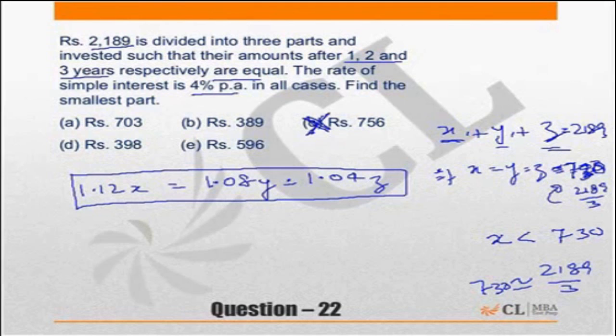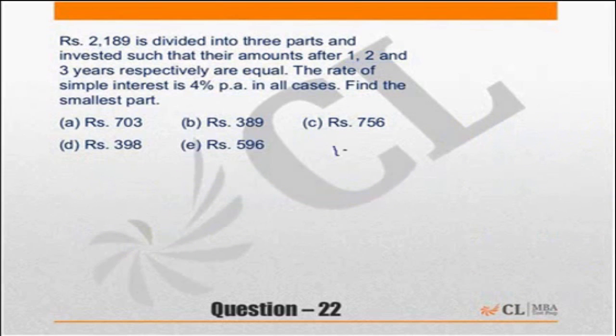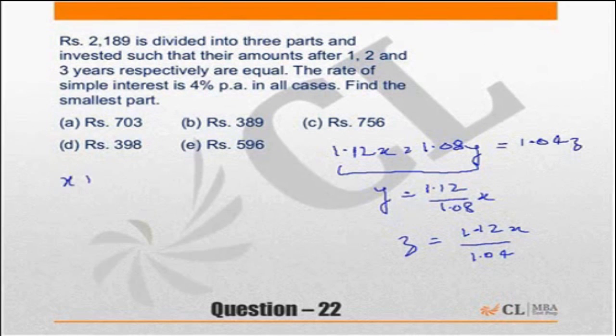Now the way out here would be to convert everything. We know that x plus y plus z is equal to 2,189. So I would like to convert everything in terms of x because that is the smallest part. So we know that 1.12x equal to 1.08y equal to 1.04z.